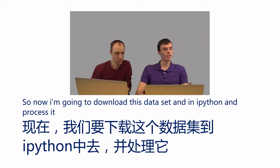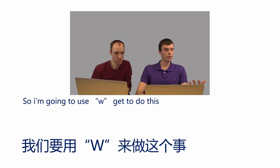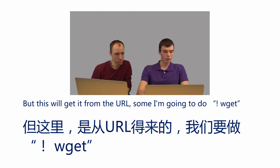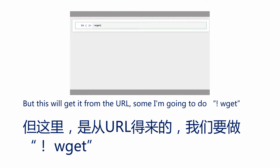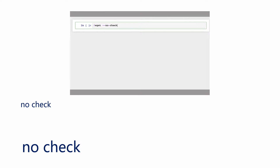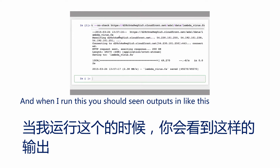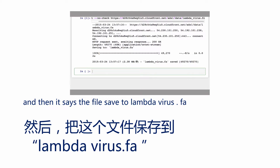Now I'm going to download this dataset in IPython and process it. I'm going to use wget to do this. If you have the file downloaded, you can also just open it locally, but this will get it from the URL. I'm going to run exclamation mark wget, and then paste in the URL to the dataset. When I run this, you should see an output something like this, and then it says the file is saved to lambda_virus.fa.